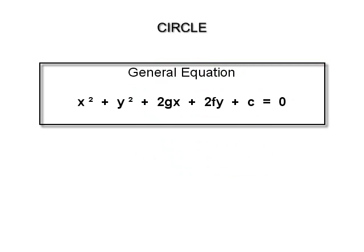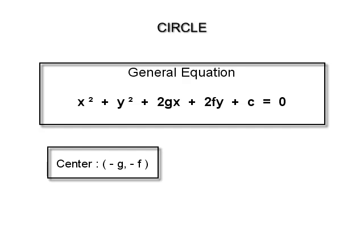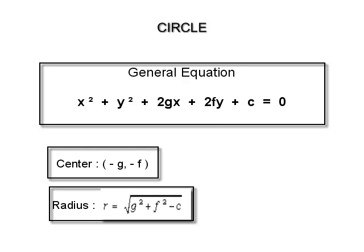The general form of an equation of a circle is x² + y² + 2gx + 2fy + c = 0. The center of this circle is (−g, −f) and the radius is r = √(g² + f² − c). This equation represents a circle if g² + f² − c > 0.